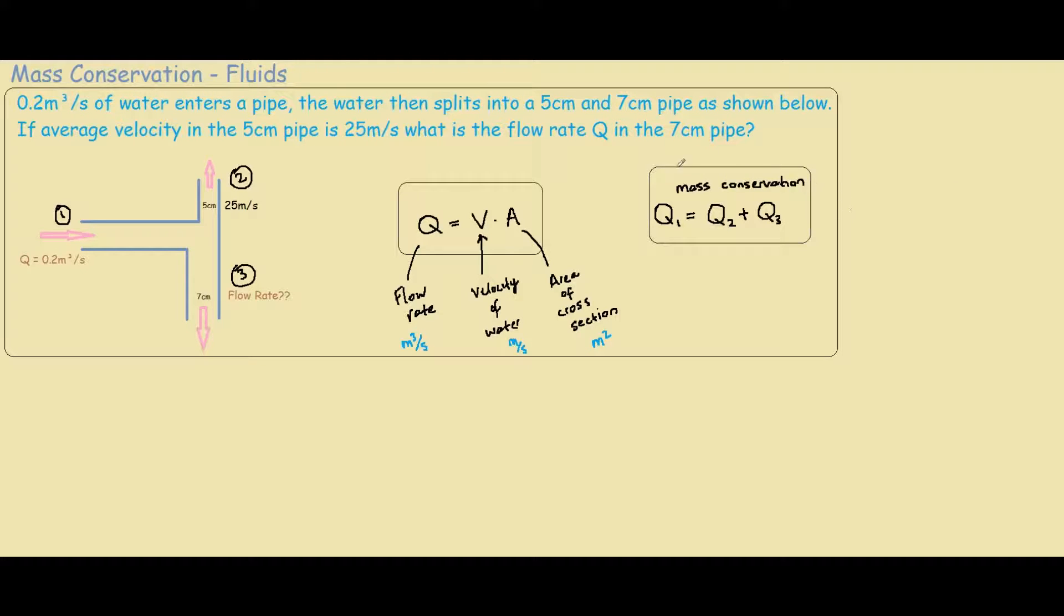Now you have everything you need to solve this problem. Let's start with our notes. We know the velocity at section 2 and we know the area. So Q2 equals velocity times area.